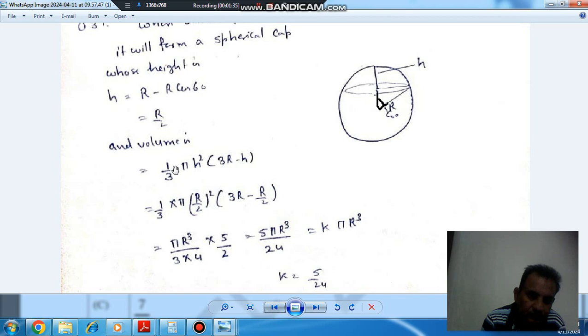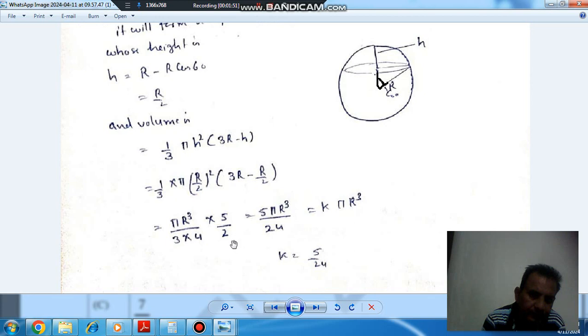And h is R/2. So here we have calculated to put in the value. We can get the volume of that spherical cap, that comes with pi/24*pi*r^3. The value of k is pi/24.